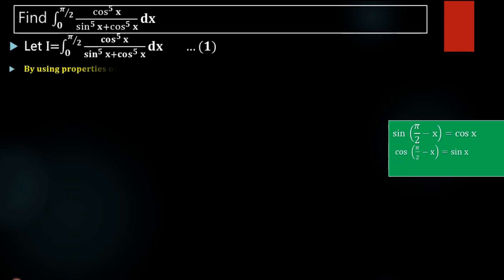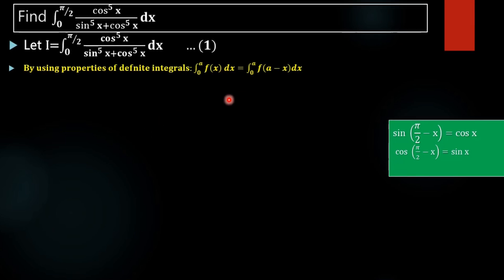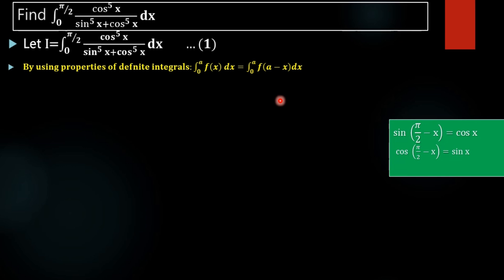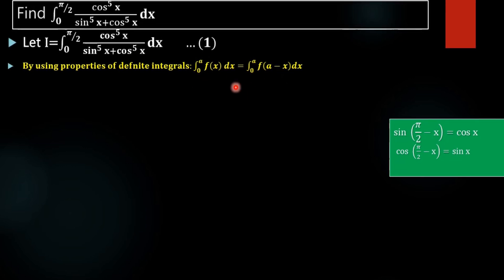We know that by the properties of definite integral, the integral from 0 to a of f(x) dx equals the integral from 0 to a of f(a minus x) dx. We are going to apply this property here.